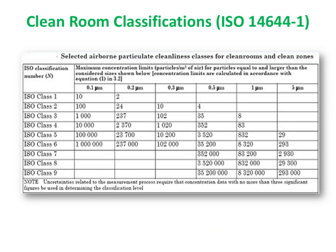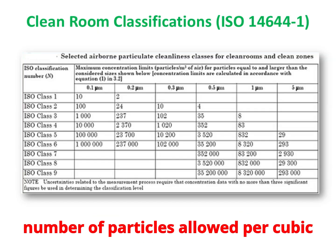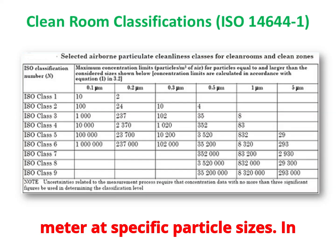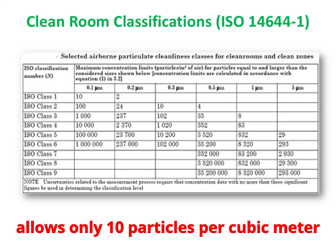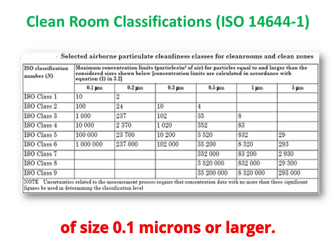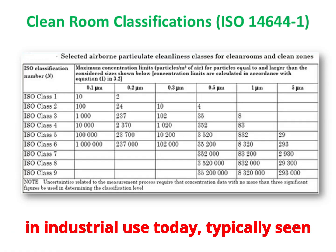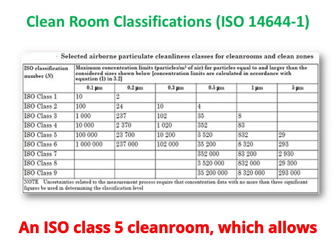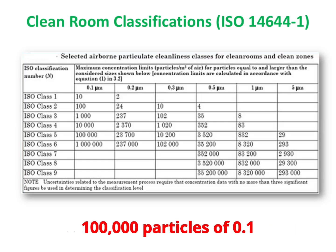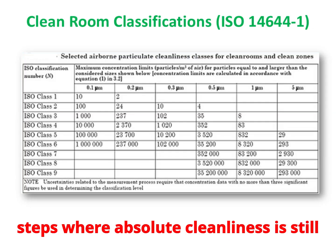Clean rooms are classified based on the maximum number of particles allowed per cubic meter at specific particle sizes, according to ISO 14644-1. ISO Class 1 allows only 10 particles per cubic meter of size 0.1 microns or larger — this is the cleanest possible environment in industrial use today, typically seen in cutting-edge EUV lithography areas. An ISO Class 5 clean room, which allows 100,000 particles of 0.1 microns, is used in wafer processing steps where absolute cleanliness is still critical but slightly more tolerance is acceptable.